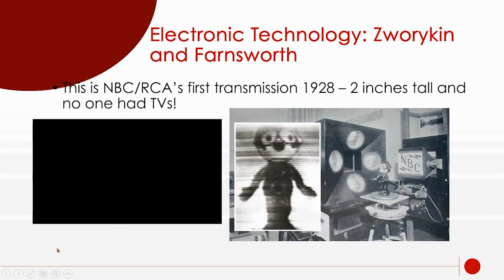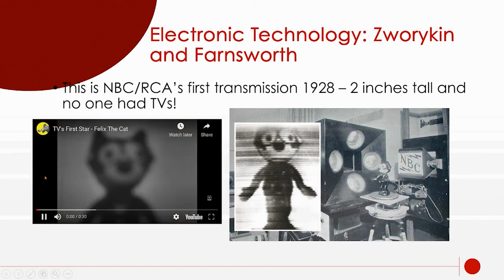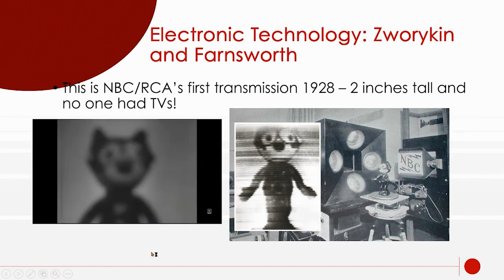NBC was the first network. They were trying television back in 1928, with only a two-inch-tall, tiny screen. Very few people had TVs — just a few rich people. So they would just put out 20 minutes a day of Felix the Cat, which was the first television content — just sitting on a turntable, sending it out to everybody who had a TV, which was not very many people.